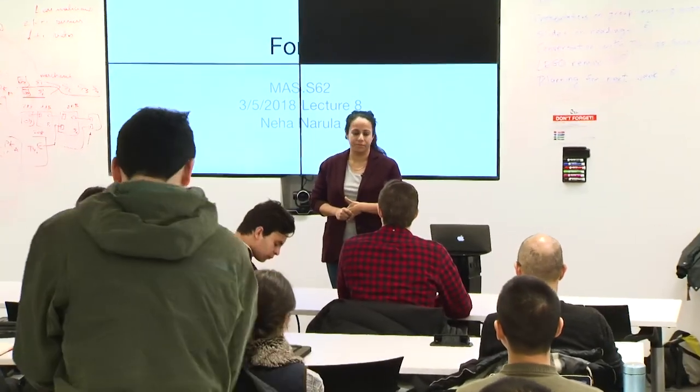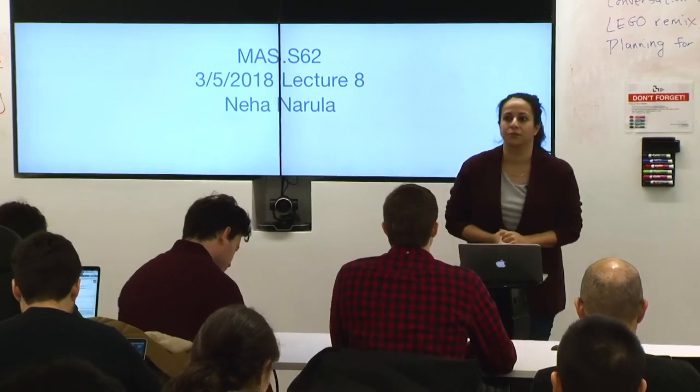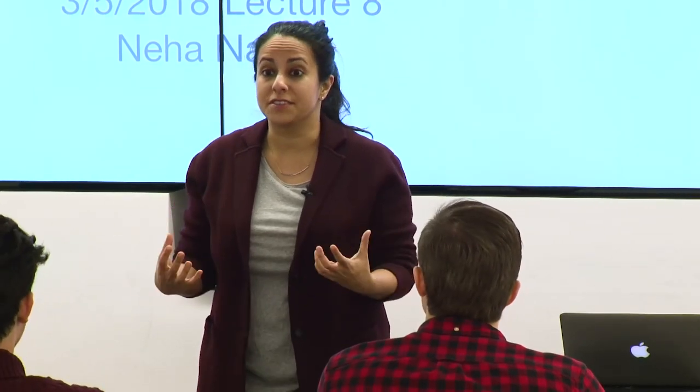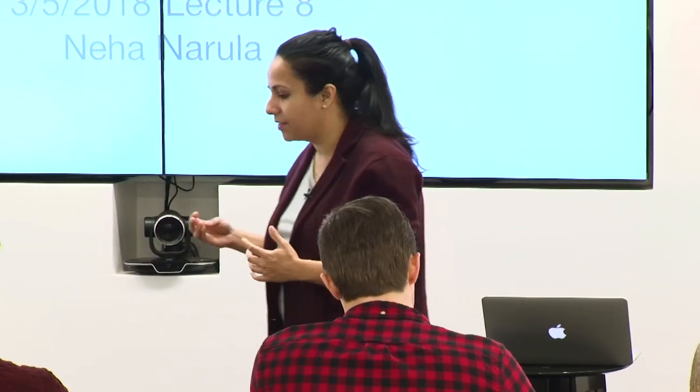Welcome back. Today we are going to talk about forks. You guys had a guest lecture last week from Aline Temescu, who talked about his project Katana. One of the really interesting things about Katana is that he's trying to prevent a server from equivocating — trying to keep a server from being able to say one answer to some people and another answer to another person. That's the goal of this whole blockchain thing. This lecture is going to be about forks.